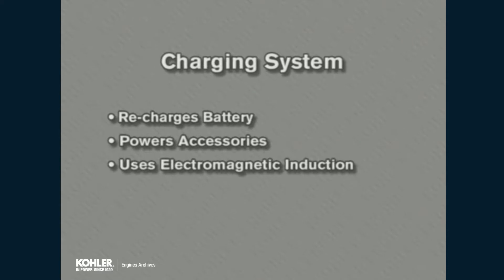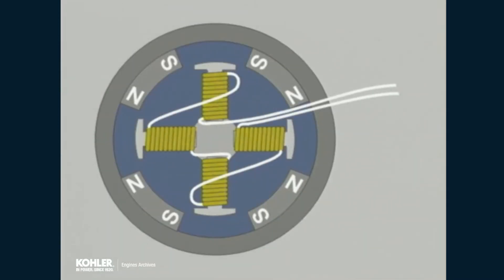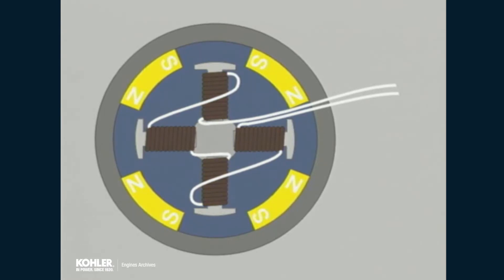Electromagnetic induction is the basis of the operation of the charging system. Windings are arranged around posts on the stator. Magnets are affixed around the inside of the flywheel, which surrounds the stator.